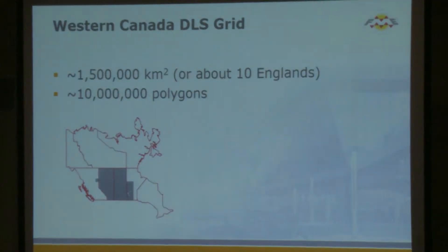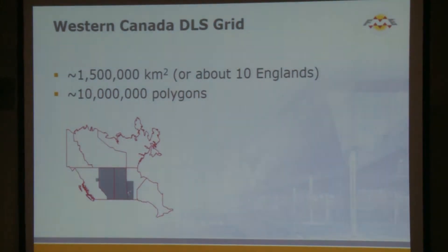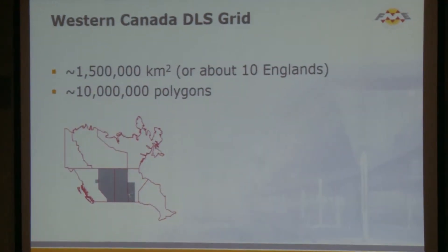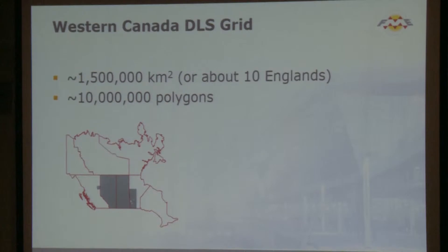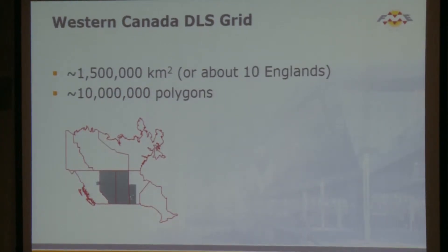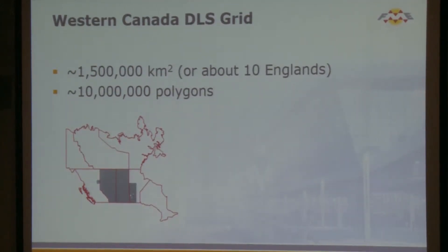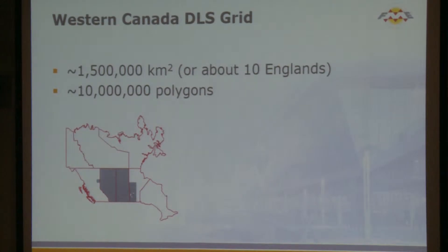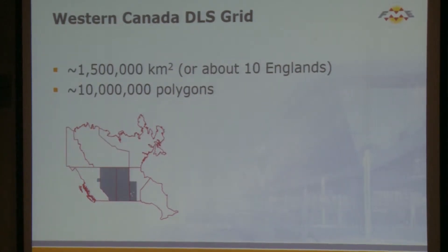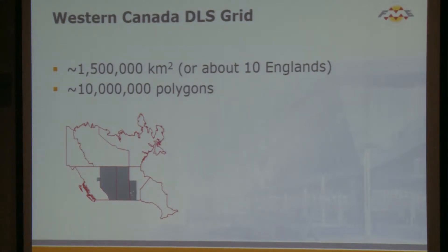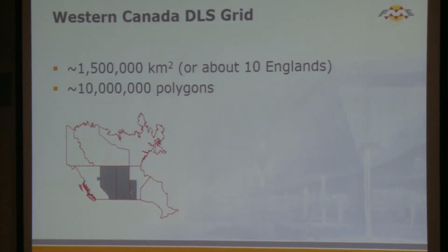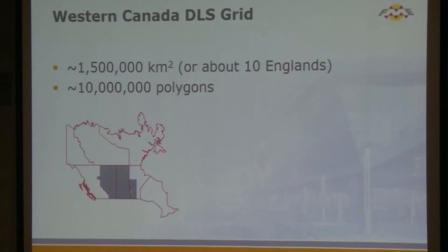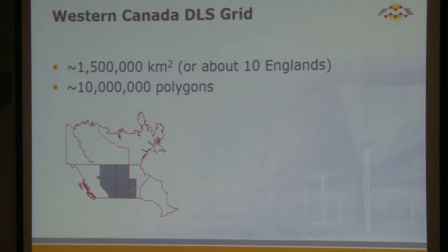So what is the Western Canadian Dominion Land Survey System? It covers about 1.5 million square kilometers — the size of about 10 Englands. One of the problems we constantly have is dealing with massive data sets across very large regional areas. That kills spatial indexing, that kills FME for memory management. We're dealing with about 10 million polygons, so it's not a small little world.